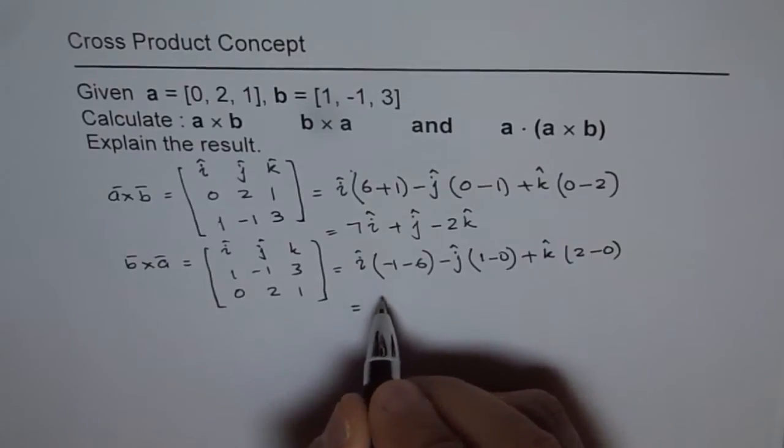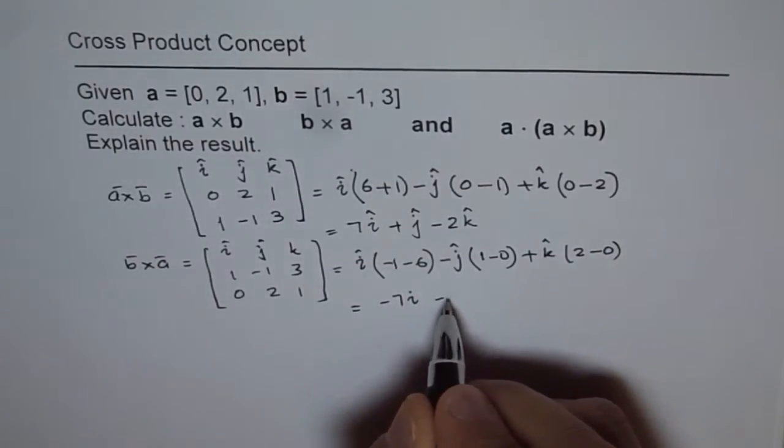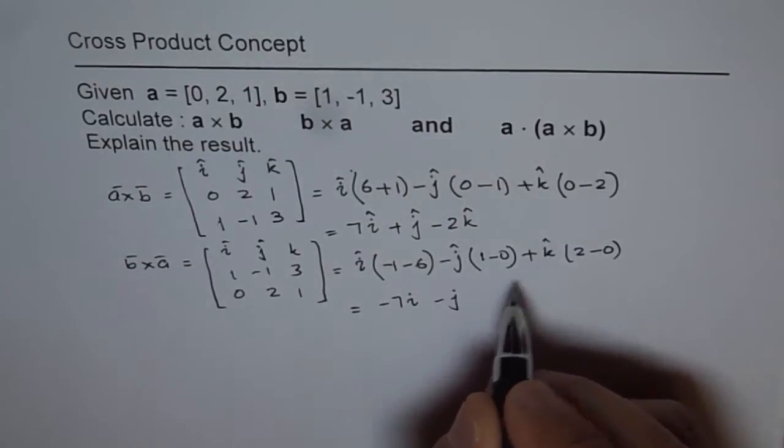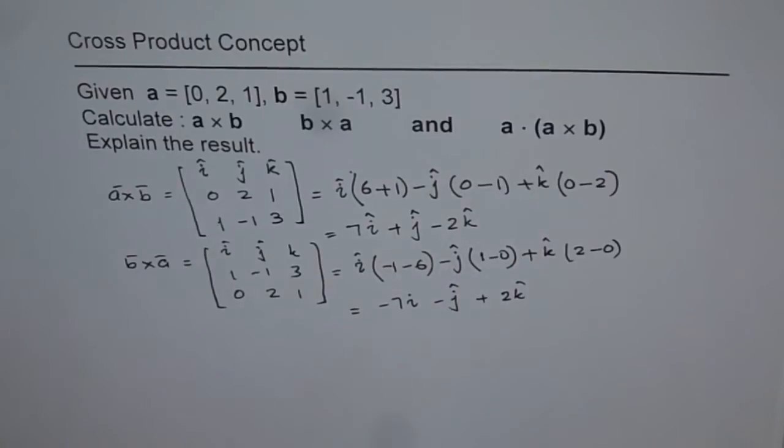That gives us minus 7I and this is minus J and here we get plus 2K.